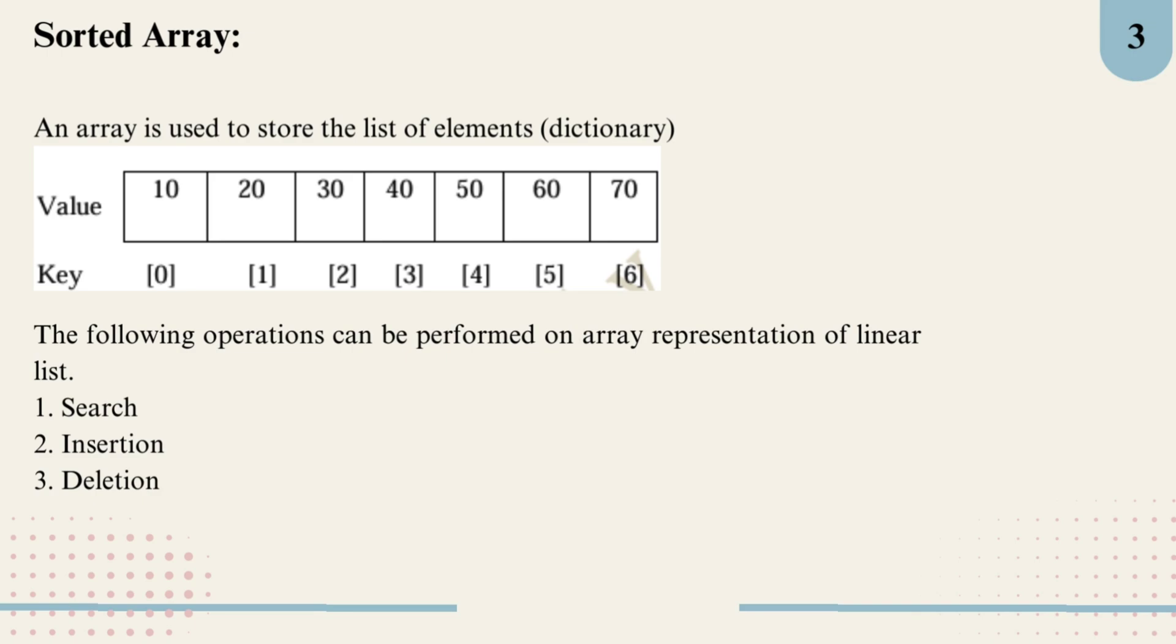Now let's focus on the sorted array method for representing a dictionary. In this approach, an array is used to store our list of elements, each element being a key-value pair from the dictionary. With this array setup, these are three main operations we can perform: first one is search, second one is insertion, and third one is deletion.